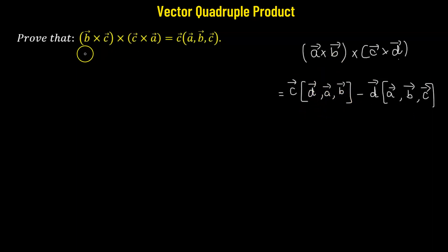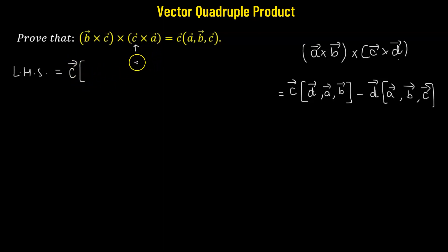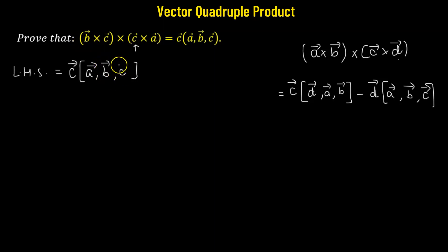We'll use this identity to expand (b cross c) crossed with (c cross a). The third vector, reading from left to right, is vector c, and this is multiplied by the scalar triple product of the remaining vectors. After c we have vector a, then back to the beginning with vector b followed by vector c.